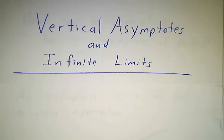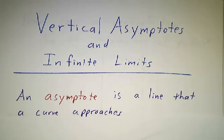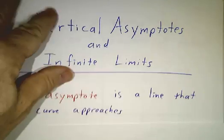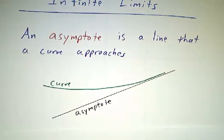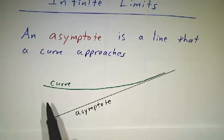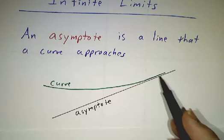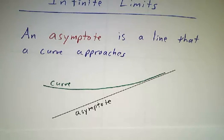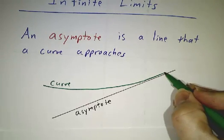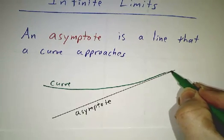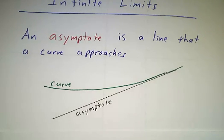In this video, we're going to talk about vertical asymptotes and infinite limits. An asymptote is a line that a curve approaches. For example, if you had the green curve here, as you go out along the green curve, you get closer and closer to the black line. So you call the black line the asymptote of the green curve.